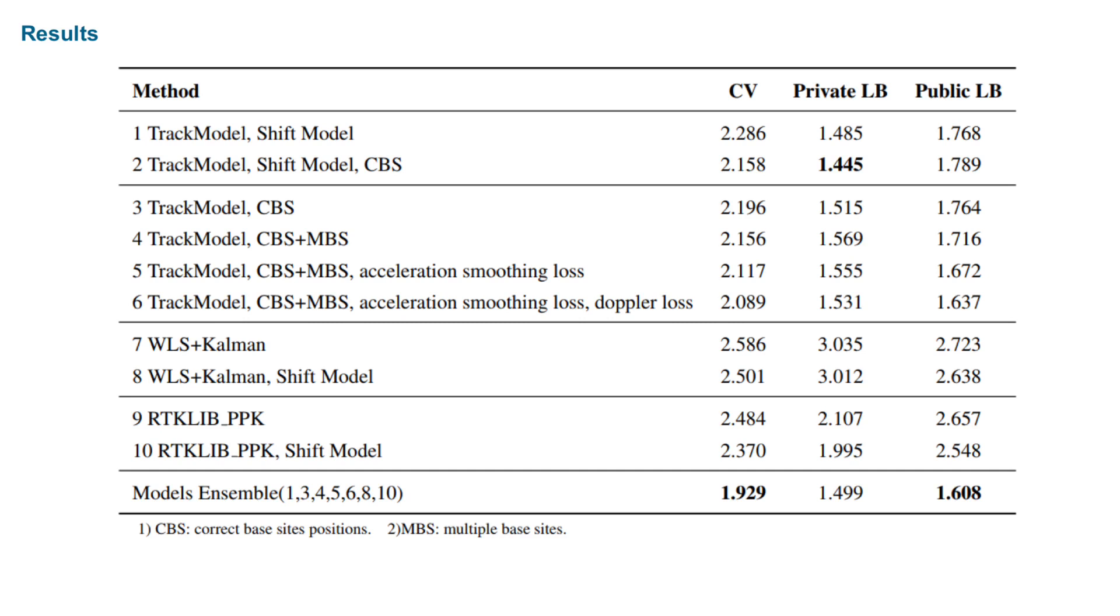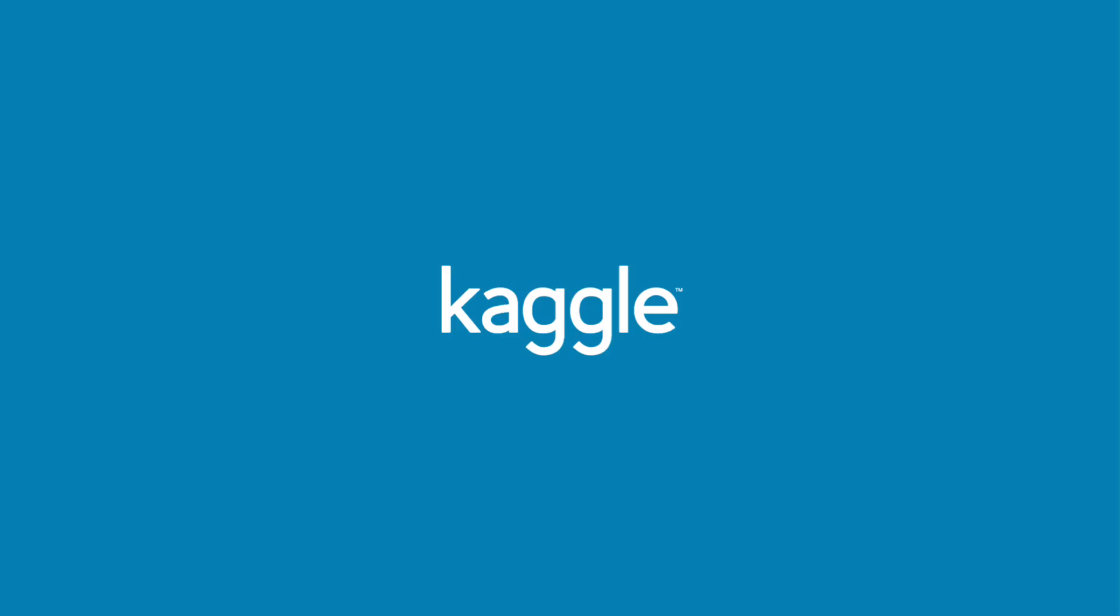When using shift model on predictions from method 7 and method 9, the scores are improved too. The final submission is an ensemble of the methods introduced before. This is my solution to such an interesting competition. Great thanks to all of you. I hope my work will be helpful to you. Thank you.